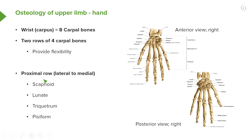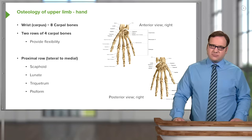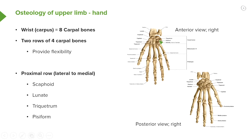We have the proximal row, and from lateral to medial — here we've got the anterior view of the right hand. This is going to be lateral; we can see here the first digit, the thumb. This is lateral, and the fifth digit is medial. This proximal row from lateral to medial has four bones: we have the scaphoid, the lunate, the triquetrum, and the pisiform bone.